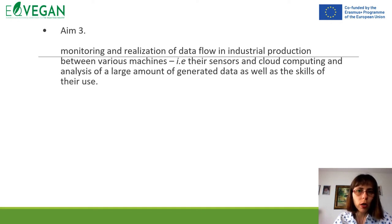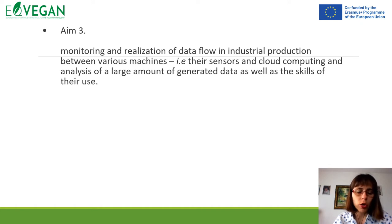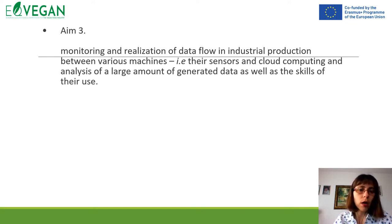By using digitalization, sensors, and Internet of Things — ICT components — we will be able to monitor and optimize, and realize data flow in industrial production between various machines. For example, we will have sensors to collect data and store this data in the cloud. With cloud computing, we will be able to analyze large amounts of generated data. We also need skills to use that data to optimize the performance of each machine in the industrial processing line, aiming for efficient processing.